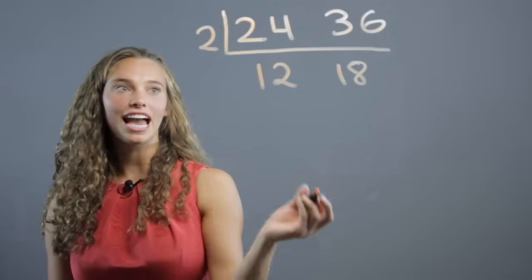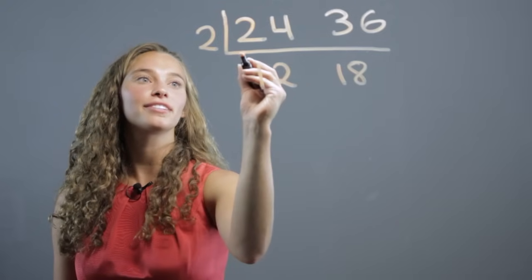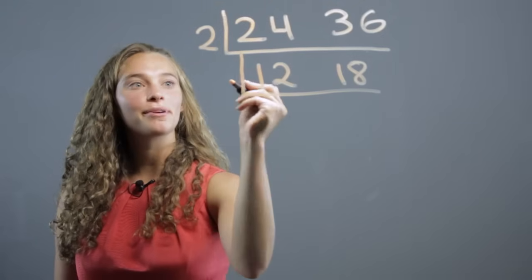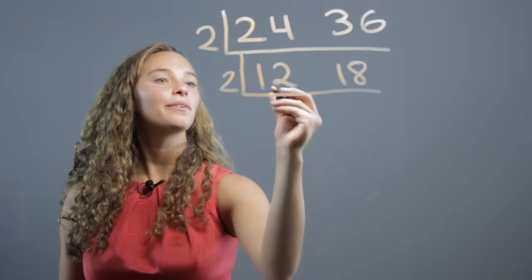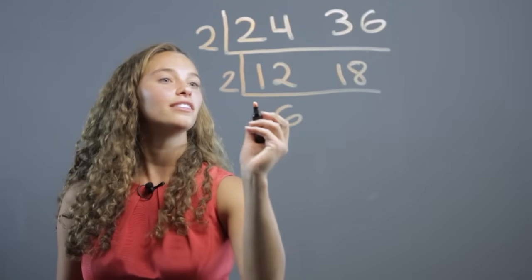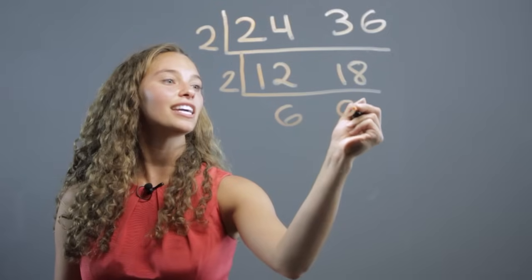Then we do it again until we have all prime numbers. So we make another L. Again, the smallest prime number is 2. So we divide 2 into 12 to get 6. We divide 2 into 18 to get 9.